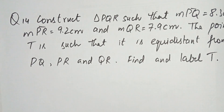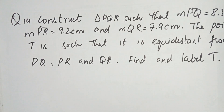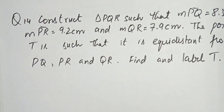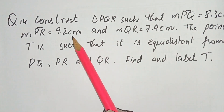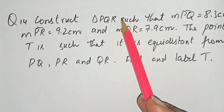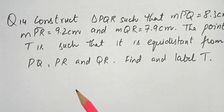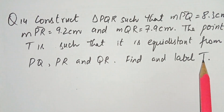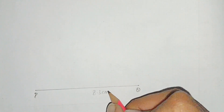Now question number 14: Construct triangle PQR such that PQ is 8.3 cm, PR is 9.2 cm and QR is 7.9 cm. The point T is equidistant from lines PQ, PR and QR — find and label T. We find it using the angle bisectors of the triangle. First construct the triangle: using the ruler, draw line PQ of 8.3 cm.